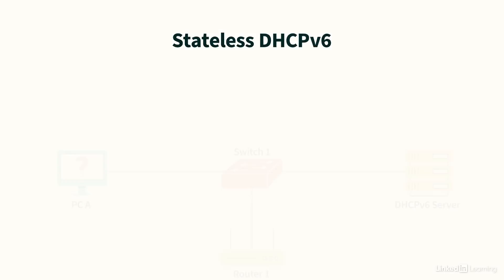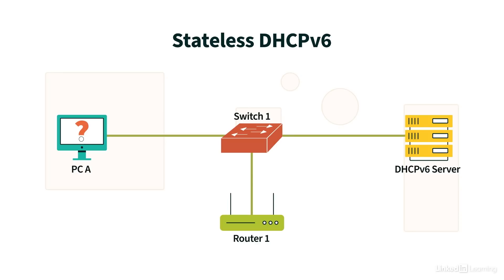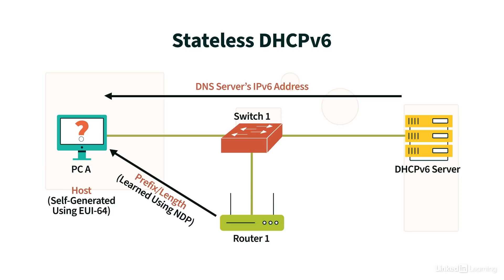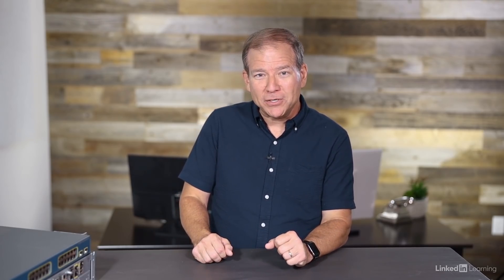Now let's take a look at the stateless DHCPv6 approach. With the stateless approach, our PC gets the prefix length information — the network information — from its router. That's possible with an IPv6 feature called Neighbor Discovery Protocol, or NDP. We're asking the router interface what network we're on. The PC can actually self-generate the host portion of its address using a process called EUI64, which generates a 64-bit host identifier based on the host's 48-bit MAC address. Then, if there's extra information the PC might need, such as the IPv6 address of a DNS server, it can get that from the stateless DHCPv6 server.